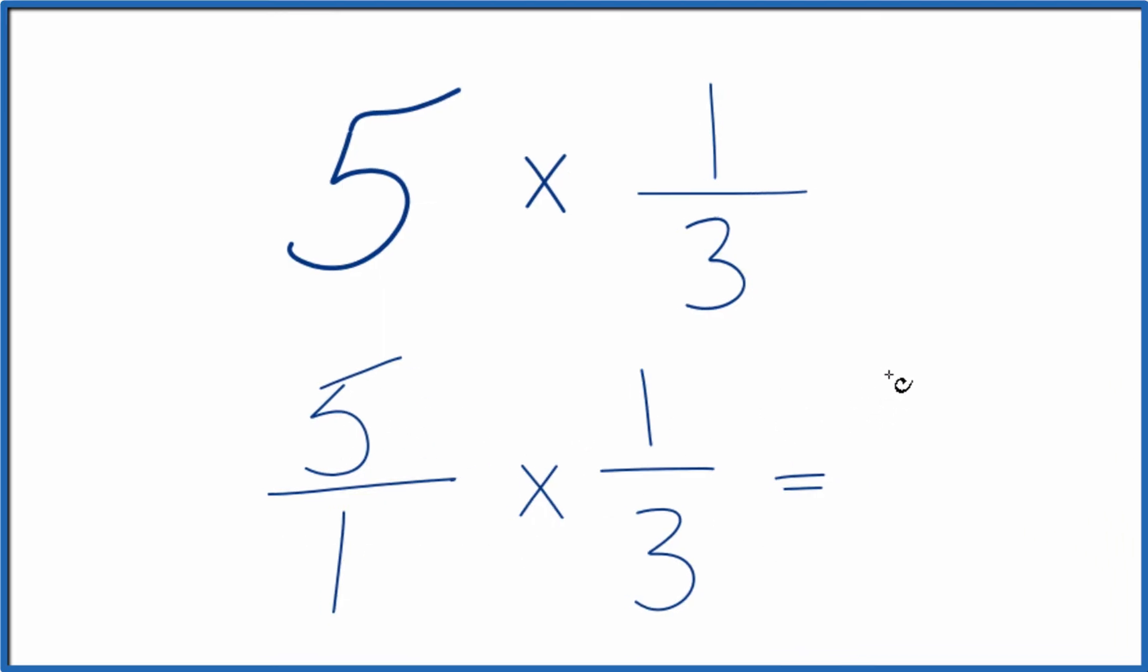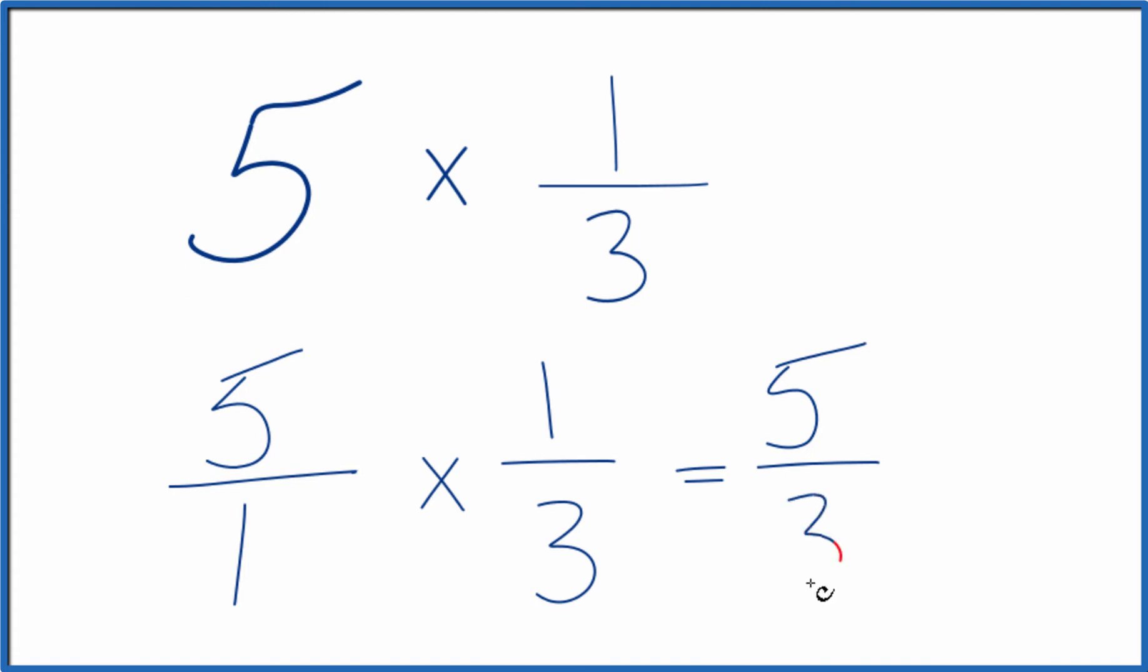5 times 1, that's 5. And 1 times 3 is 3. So 5 times 1 third, that equals 5 thirds.